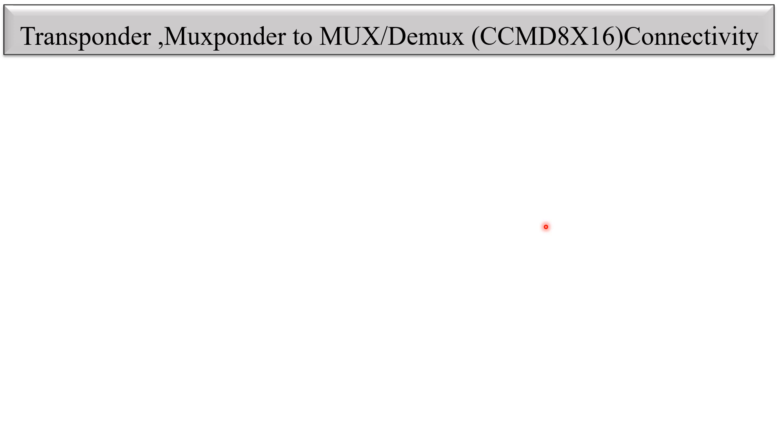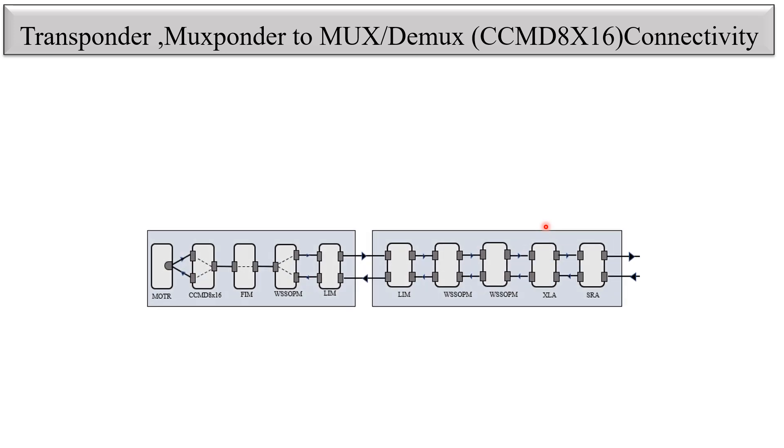Hello friends. In today's video we will discuss about the transponder and muxponder to CCMD8x16 connectivity. Here we have taken the example of CCMD8x16 as a muxponder mux, and we will see how the CCMD8x16 is connected physically by the transponder and muxponder. For the circuit reference I have taken this circuit example — you can see here this is the transponder/muxponder card which is connected to CCMD8x16.